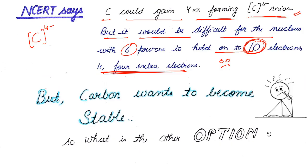So what should carbon do? Carbon still wants to become stable. Earlier it lost the possibility to become C⁴⁺, and now it has lost the possibility to become C⁴⁻. Try to figure out if there is any other option for carbon to become stable — and this we will discuss in the next video. Thank you.